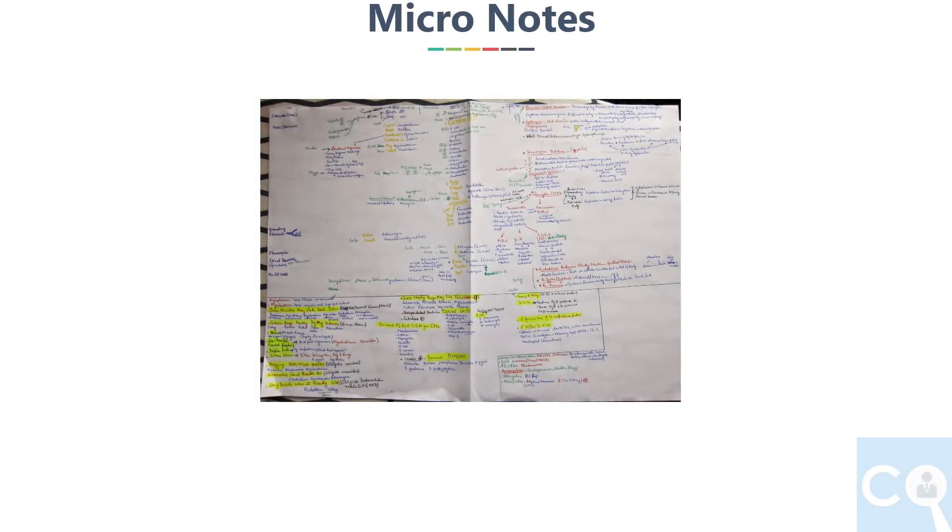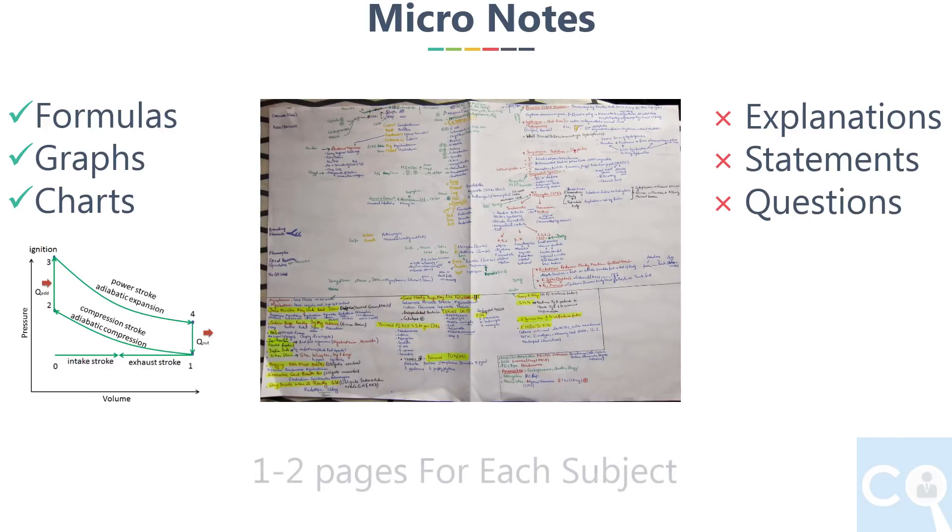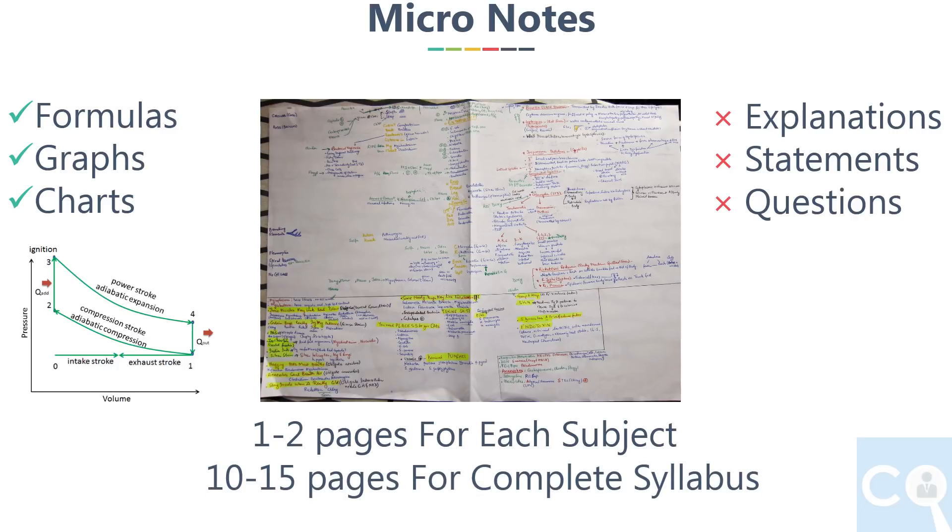Second part is micro notes. These are like your handbooks. They are temporary, only for one exam. Write only important formulas, graphs, or charts in these notes. Try to avoid explanation statements or questions. You can explain the concept in any condensed form. Every subject should come only in one or two pages maximum. So in total you will have 10 to 15 pages for complete syllabus.